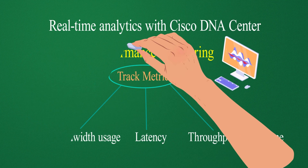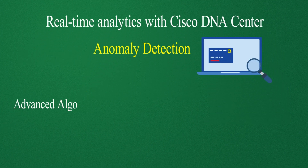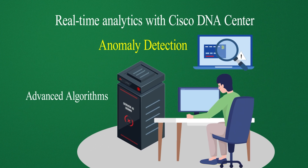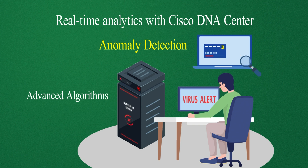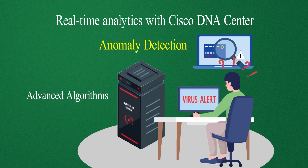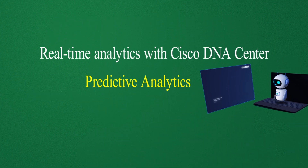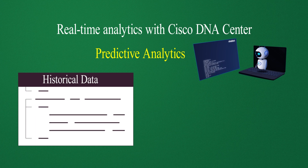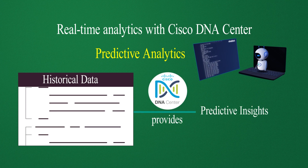Anomaly detection: with advanced algorithms, Cisco DNA Center detects unusual network activity and generates alerts. This helps you identify and address potential issues before they impact your network. Predictive analytics: by analyzing historical data, Cisco DNA Center provides predictive insights.